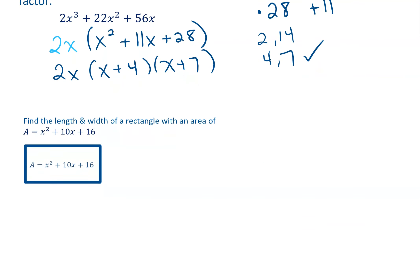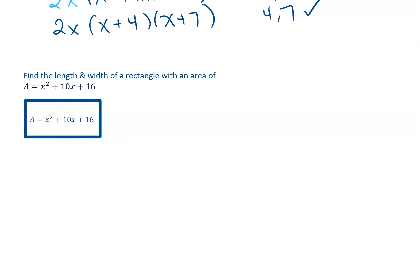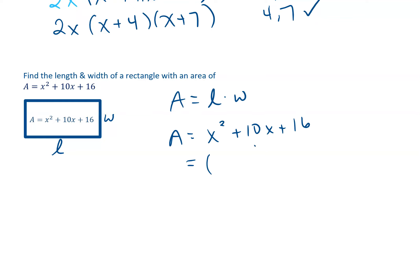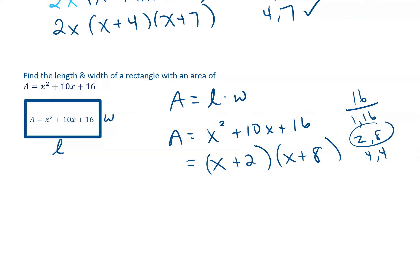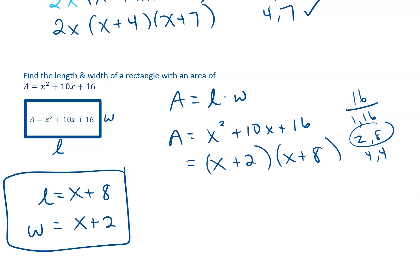Now let's look at a word problem with a rectangle. This rectangle has an area of x squared plus 10x plus 16, and we want to know the length and width. We know area is length times width, so if we factor x squared plus 10x plus 16, that should give us the length and the width. What multiplies to give me 16? Options are 1 and 16, 2 and 8, and 4 and 4. Which pair adds to give you 10? 2 and 8. So x plus 2 and x plus 8. The length is x plus 8 and the width is x plus 2.